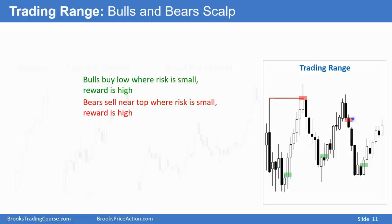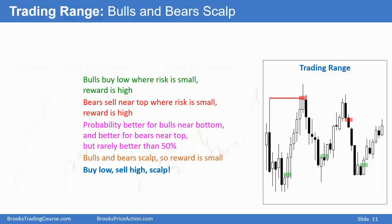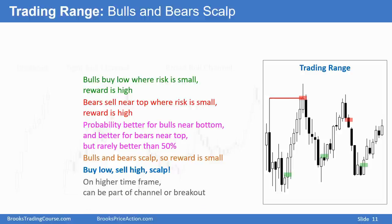So you want to buy low where the probability is highest for making a profit and the risk is less, and you want to sell high where the probability of making a profit as a short is highest and the risk is less as well. Traders will sell at the prior high, sell on the reversal down. Here we have a second entry buy, a reversal up, a double bottom and a micro double bottom. Both the bulls and bears are scalping because they know the reward is small. You want to be buying low, selling high, and taking quick profits. On a higher timeframe chart it can be part of a bull channel or part of a breakout, but on this timeframe it's a trading range — buy low, sell high, scalp.